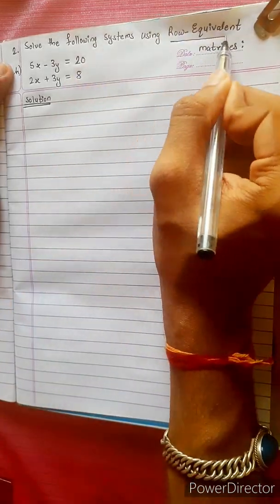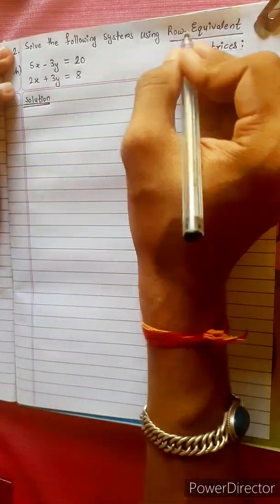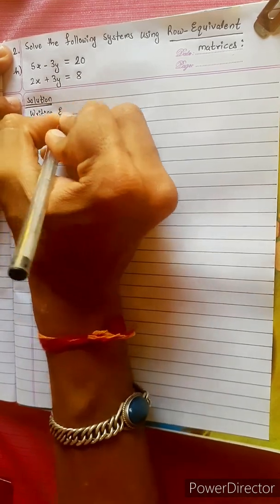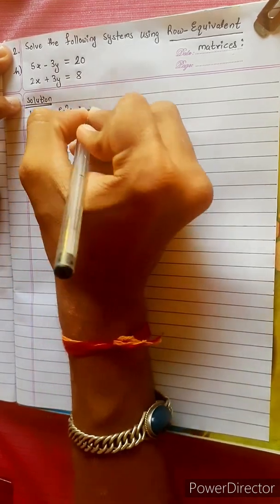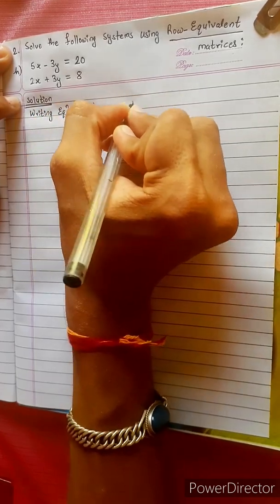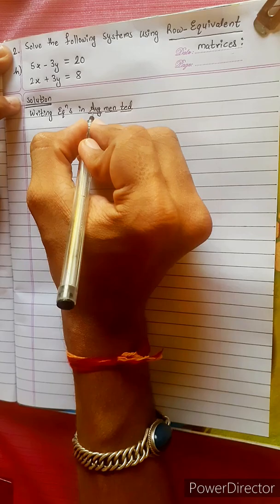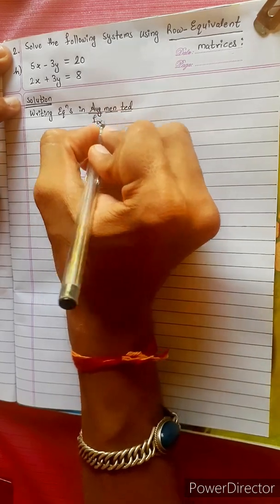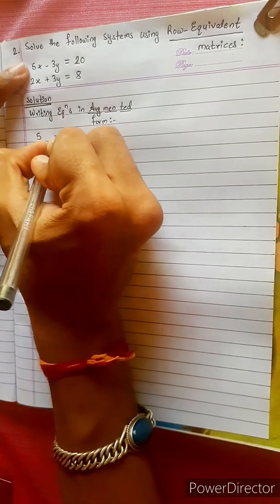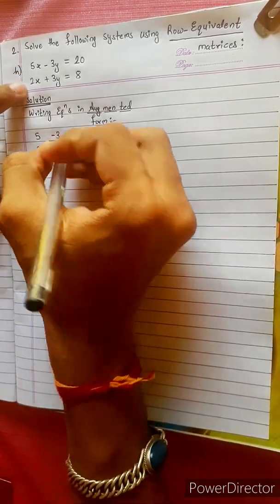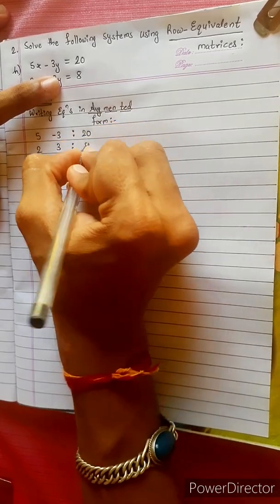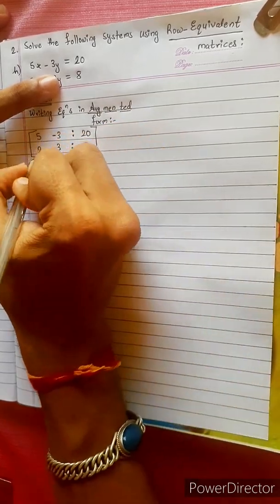We will solve the following systems using Row Equivalent Matrices. We start by writing the given equations in augmented matrix form.